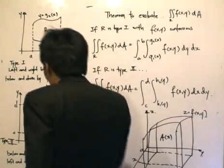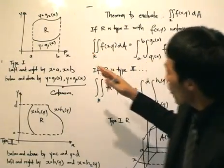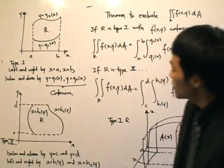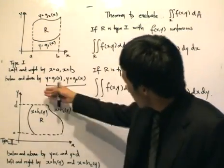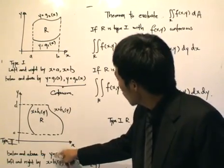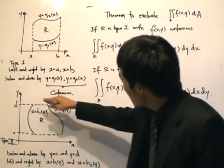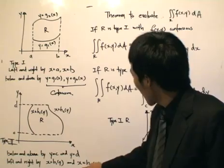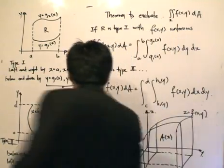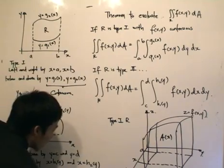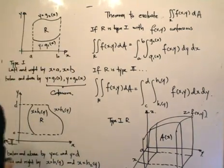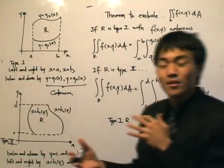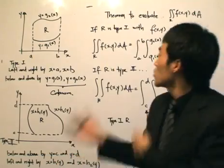What is type 2? Type 2 is shown over here. It's a bit different, so I hope you can draw some parallels or a contrast between the two. This time, region R is bounded below and above by y equals c and y equals d, and left and right by x equals h1 of y and x equals h2 of y. Again, these two must be continuous. It's your parallel with single-variable calculus of integrating with respect to x and integrating with respect to y.